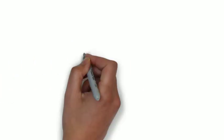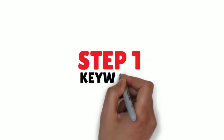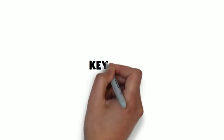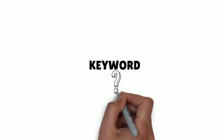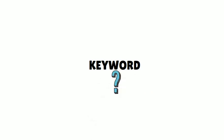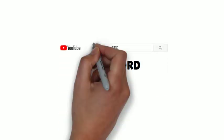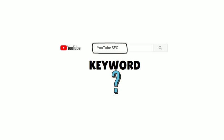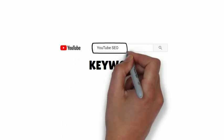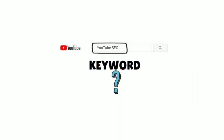Let's start then. Step number 1: Keyword. The very first step of YouTube SEO is keyword. Now what is a keyword? Well, a keyword means that phrase which you just typed in on the YouTube search box — this one. This is a keyword. And I knew it very well that my audience will do a search using this phrase or keyword.